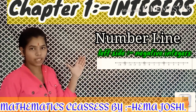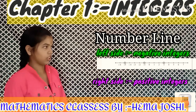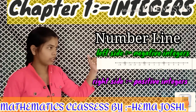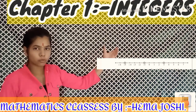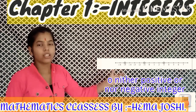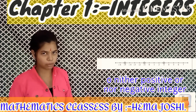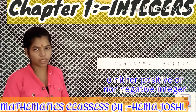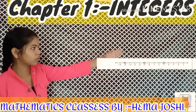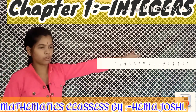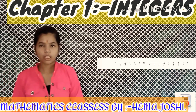This is a number line which consists of all the positive and negative integers. It consists of two parts: the left side is the negative integers and the right side is the positive integers. It can be extended to infinite points in both directions, and the middle point is zero, which is neither positive nor negative.